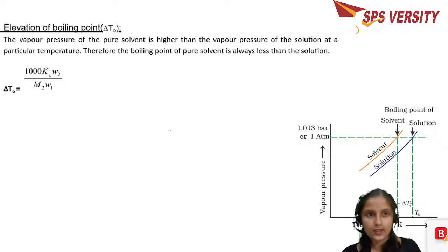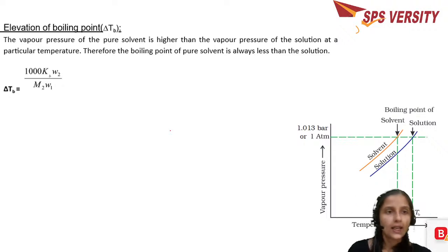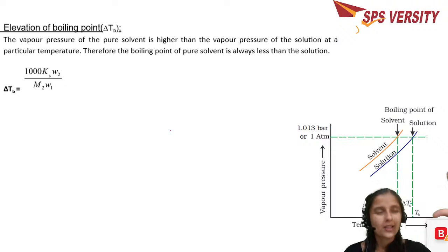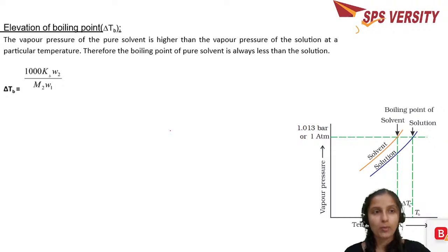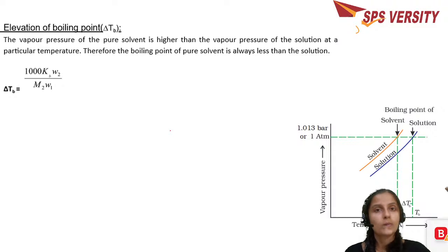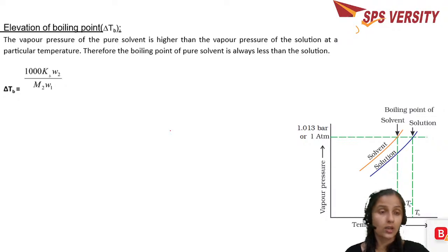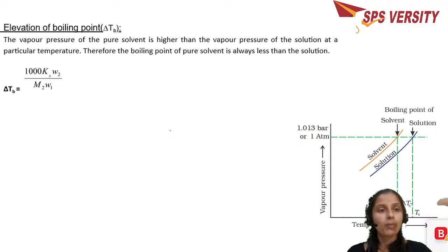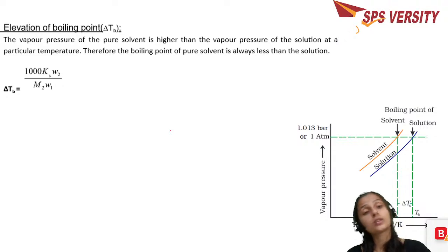Next is the elevation of boiling point, which continues from the previous topic. Take a volatile solvent — it has higher vapor pressure. Add a solute — vapor pressure decreases. Now if you have to heat two solutions — one pure solvent and one solution — which has the higher boiling point? The solution, because the solvent's vapor pressure is already lower due to the solute–solvent interactions.